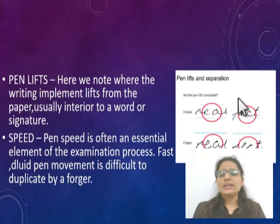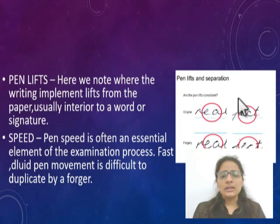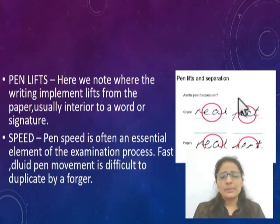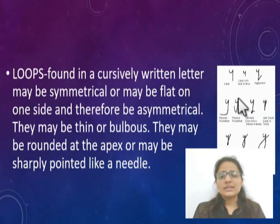Next is speed. Speed is also helpful in examining signatures. When a person writes their original signature, the speed will be different compared to when another person tries to copy it. The speed will vary or be less compared to the original.